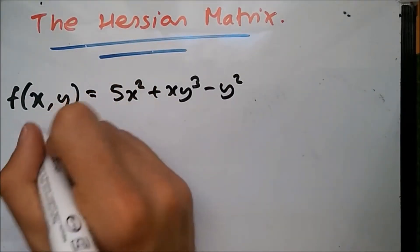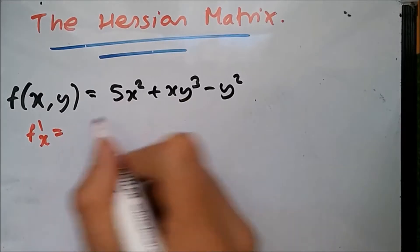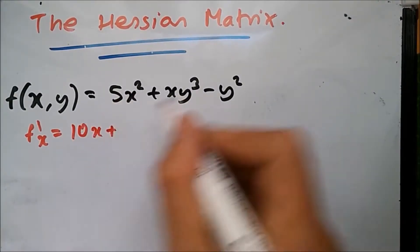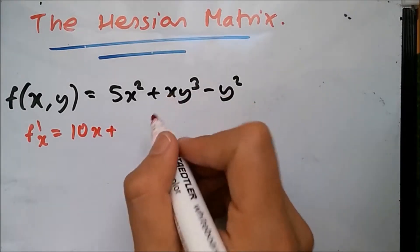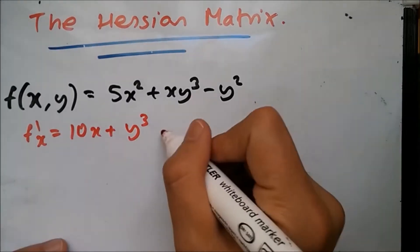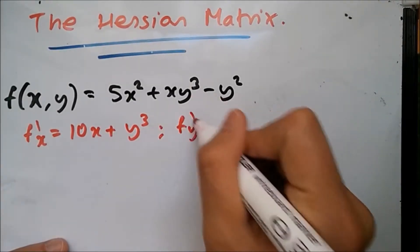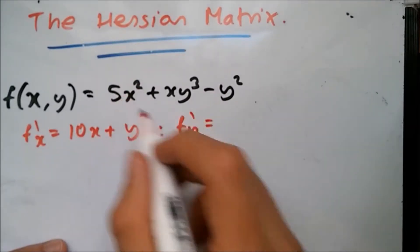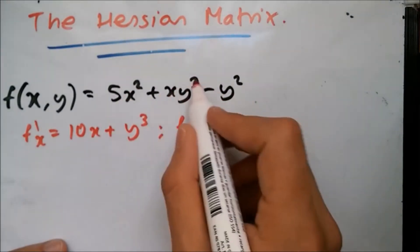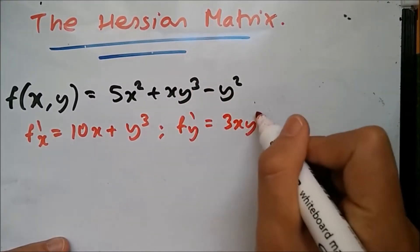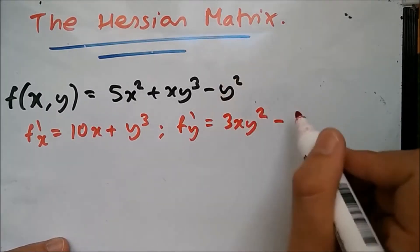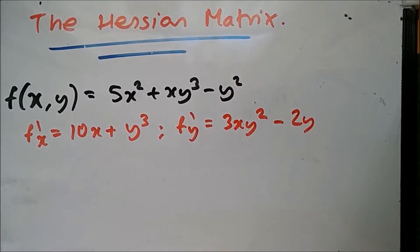Calculating the first partial derivative with respect to X, we treat everything as a constant except X. So differentiating this term we're gonna get 10x plus, Y is a constant so differentiating X you just get 1, so it'd be y³. Differentiating y² we get 0. Likewise, now differentiating with respect to Y, this part becomes 0. X is a constant, so y³ becomes 3, drop it down and subtract by 1, you get 3xy². Again, y² is the variable of interest, drop it down we get 2y.